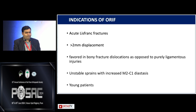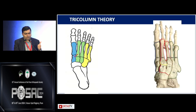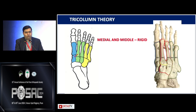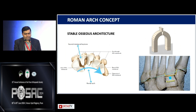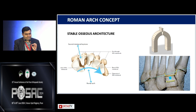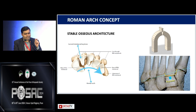Indications for open reduction include acute fractures with more than 2 mm displacement, favored more in bony fractures compared to purely ligamentous injuries, and unstable strains in younger patients. Two important concepts when fixing Lisfranc fractures: first, the tricolumn theory — the medial and middle columns should be rigidly fixed while maintaining flexible fixation for the lateral column. Second is the Roman arch concept — the second metatarsal forms a stable mortise acting as a keystone, and this osseous architecture must be maintained.